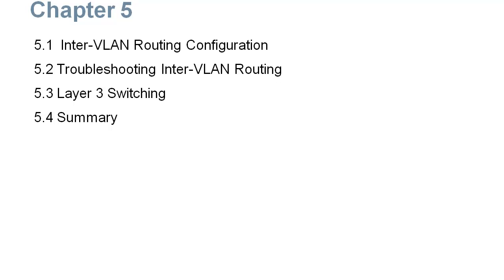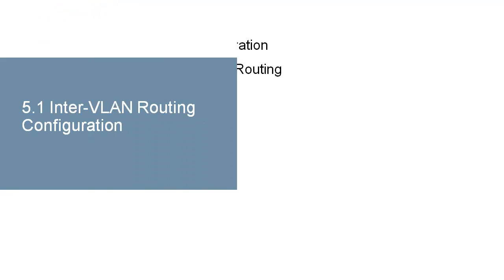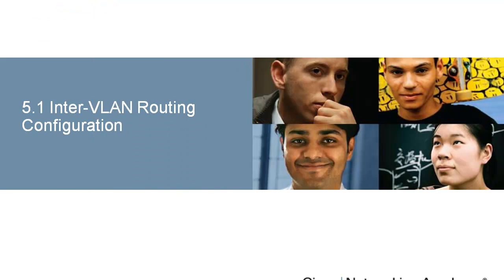So we're going to talk about Inter-VLAN Routing. After you've set up multiple VLANs on a switch, those VLANs cannot talk to each other without a router present. We're going to talk about different ways to set up the router, then a little bit about troubleshooting, a little bit about Layer 3 switches, and then we're good.